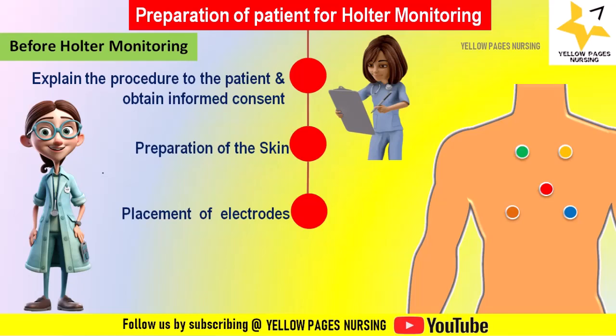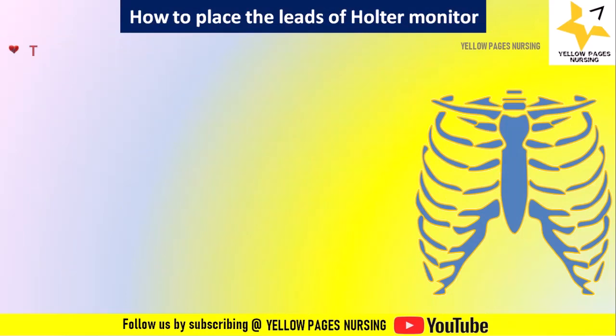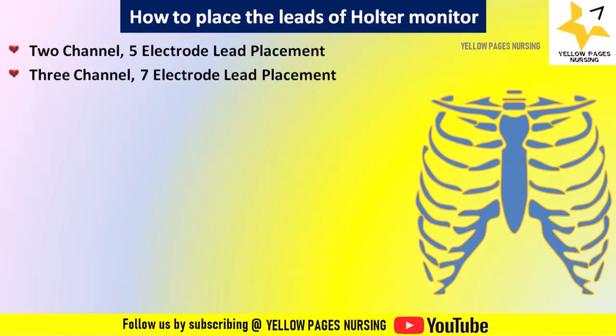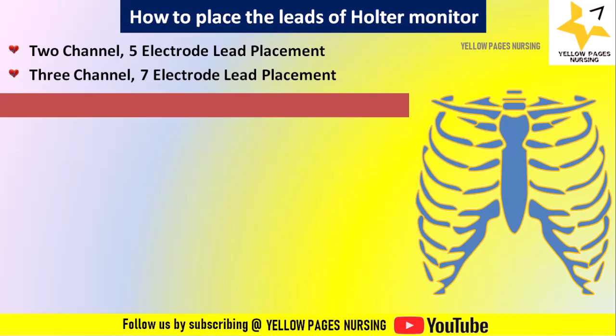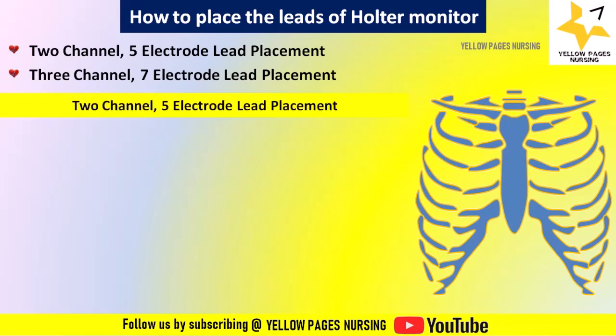The most common lead configurations are 2-channel 5-electrode and 3-channel 7-electrode lead placement. These channels constantly monitor and record ECG data for 24 to 48 hours. For placement, follow the manufacturer's guide or reference to place the leads.